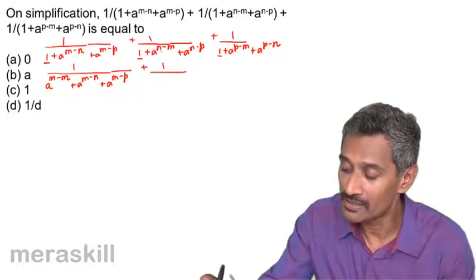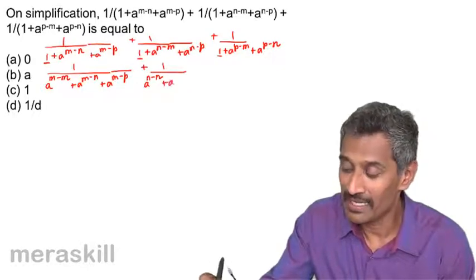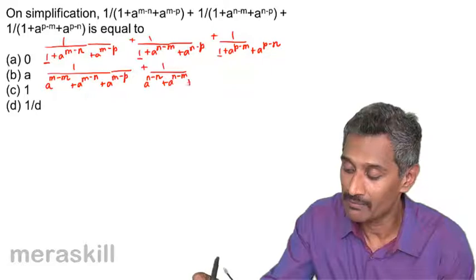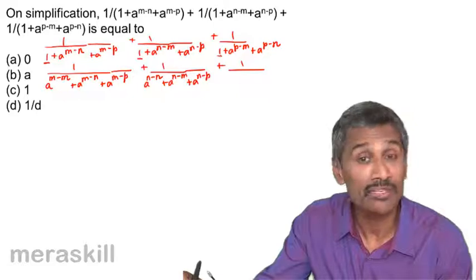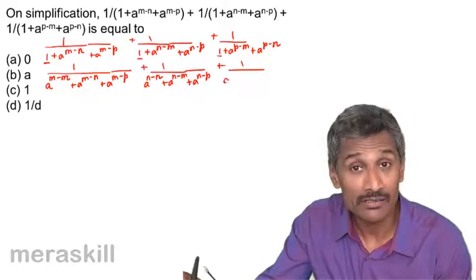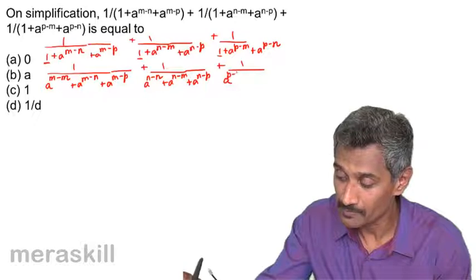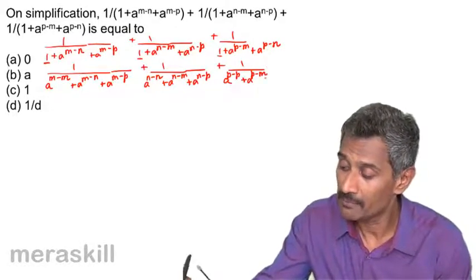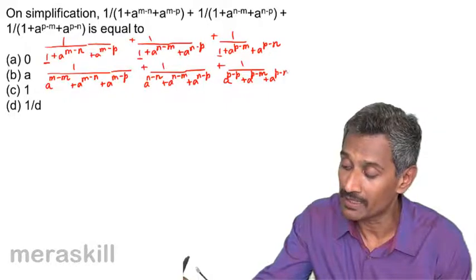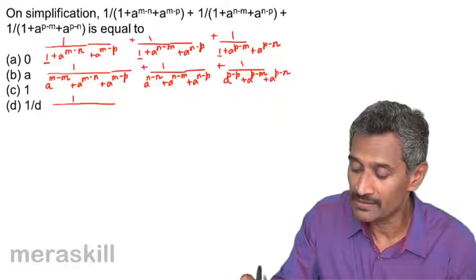Since n is repeated in the second term, the one is written as a raised to n minus n. Similarly, in the third term we write the one as a raised to p minus p, plus a raised to p minus n, plus a raised to p minus n.